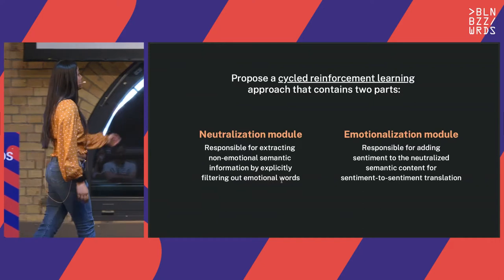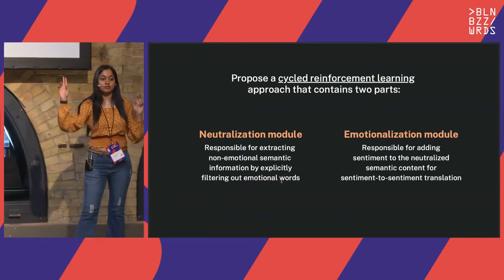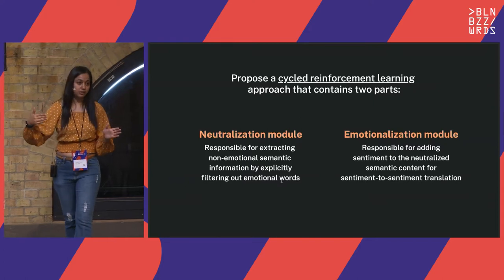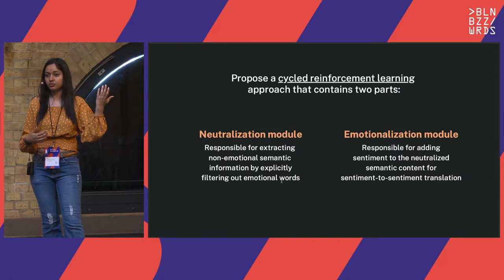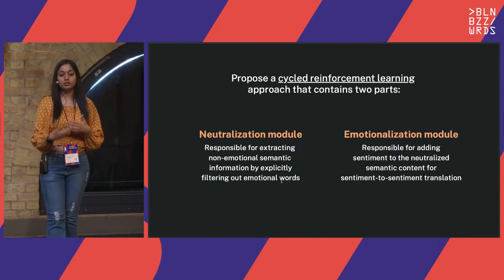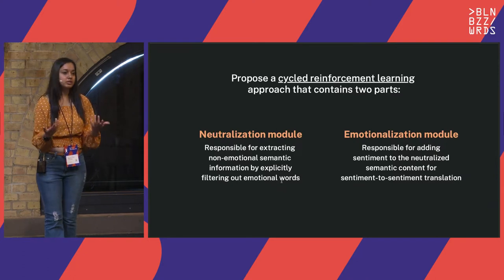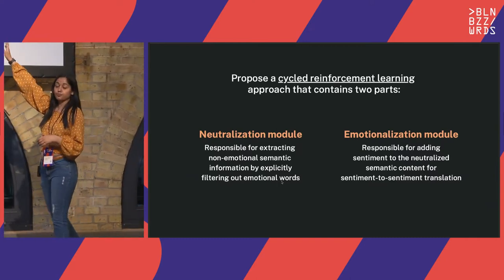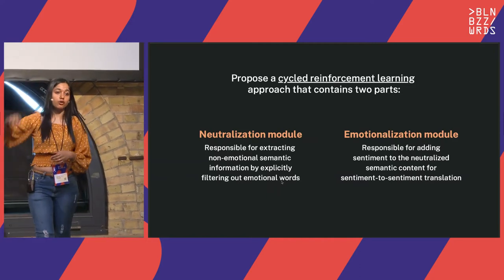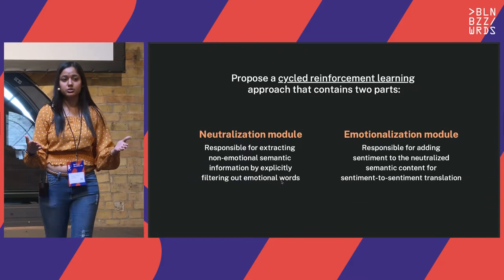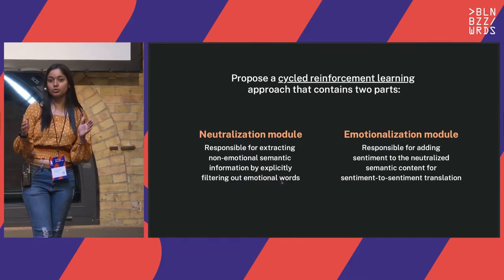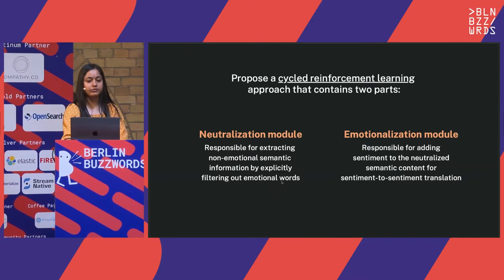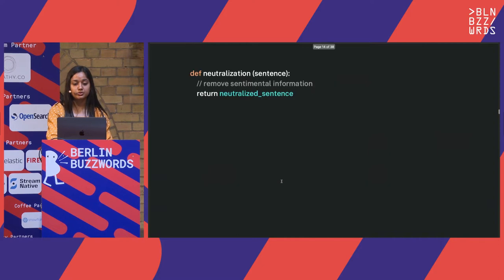The emotionalization module then takes the neutralized sentence — 'this food is very ___' — and adds a contrasting style. Where the source input had 'delicious,' we would now put something like 'doesn't taste good' or 'very unpleasing.' That would be added by the emotionalization module. Notice that we are preserving the semantic content of the input sentence because the sentence itself has not changed — only the style has been manipulated. This is how the cyclic reinforcement learning method works.